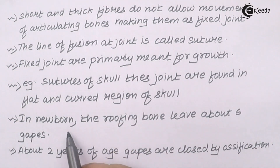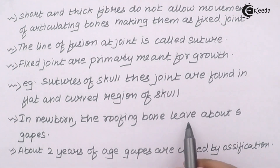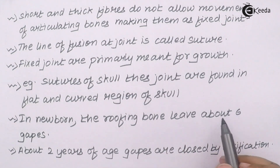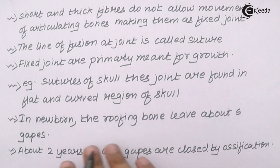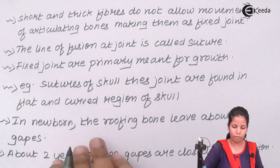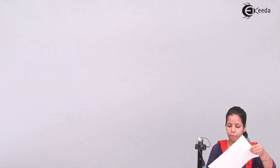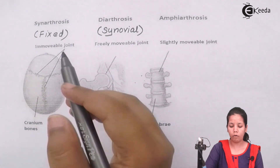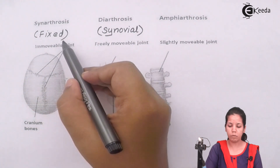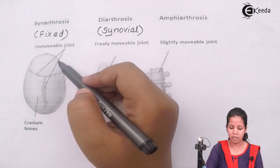In newborn individuals, the roofing bone leaves about 6 gaps, and by around 2 years of age, these gaps are closed by the ossification process. This is an example of fixed joints, also called immovable joints.